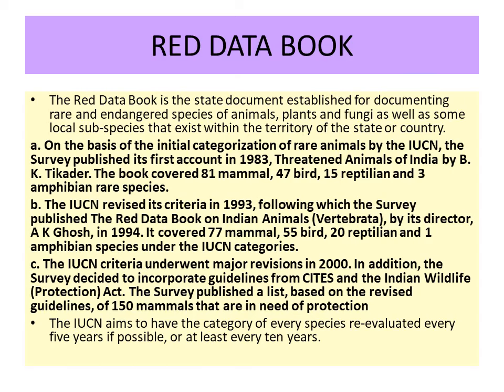IUCN aims to have each species category re-evaluated every 5 years if possible, or at least every 10 years. The Red Data Book contains the threatened species of plants, animals, fungi, and other organisms. I think the concept is clear — thank you.